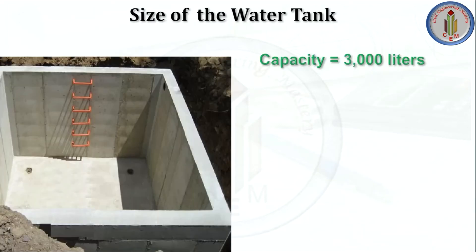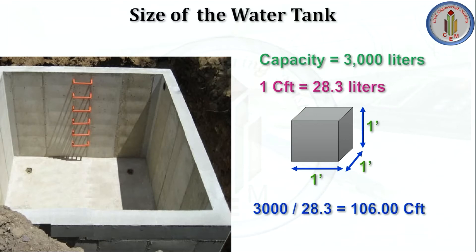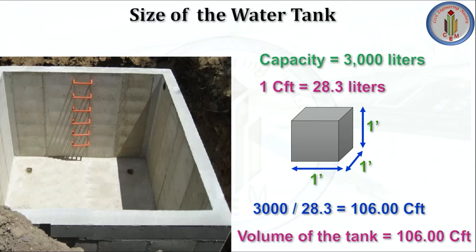Next, let's find out the size of the water tank. We know the capacity is 3000 liters. One cubic foot (cft) can store 28.3 liters of water — that is, one cubic foot means one foot length × one foot width × one foot height. From this, for 3000 liters we need 106 cft. This is the volume required to store 3000 liters.